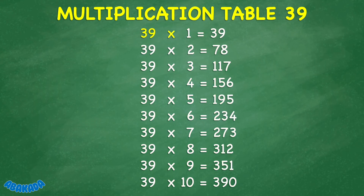39 times 1 equals 39. 39 times 2 equals 78. 39 times 3 equals 117. 39 times 4 equals 156. 39 times 5 equals 195. 39 times 6 equals 234. 39 times 7 equals 273.